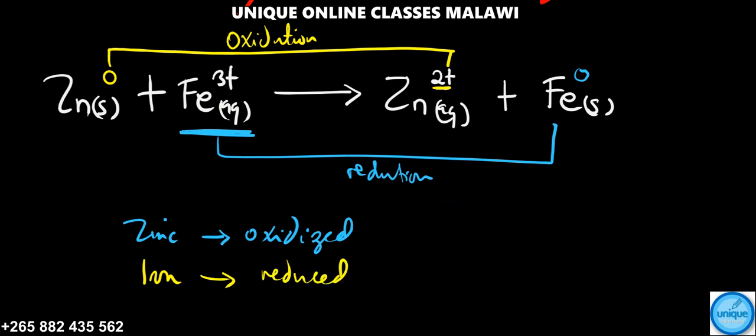What is the oxidizing agent? From my previous videos, the species which has been oxidized is the reducing agent. So zinc is the reducing agent. Whereas the oxidizing agent is the species which has been reduced, so this one is the oxidizing agent.